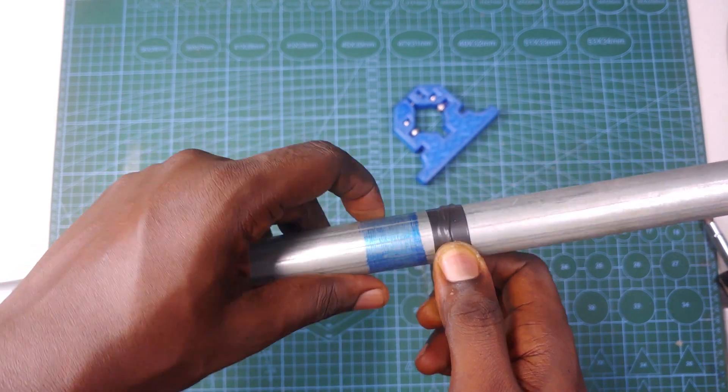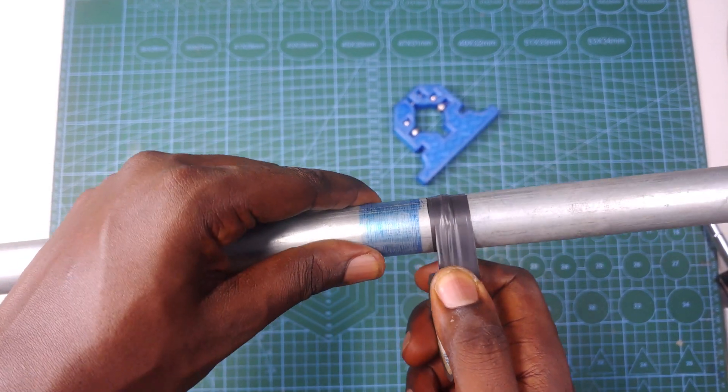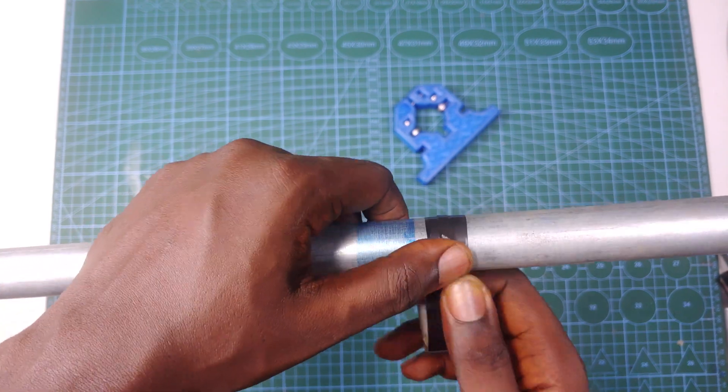This is obviously exaggerated and I don't expect anybody to build a CNC with a pipe that has this much of a defect.